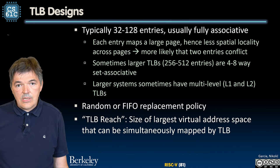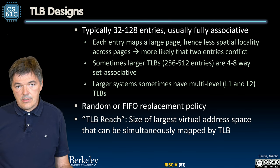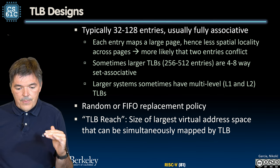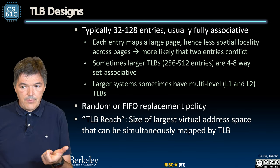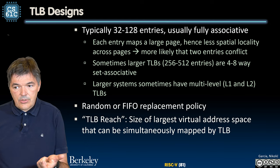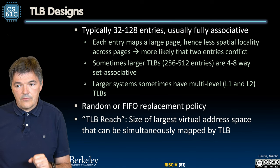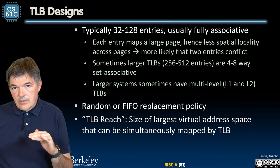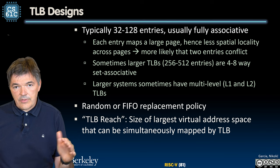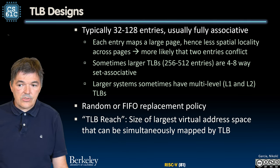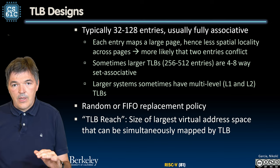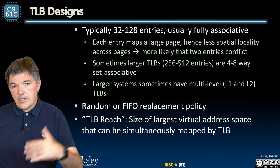So how is this TLB actually being designed in processors? Typical TLBs nowadays can be either small and quick — 32 to 128 entries — and are usually fully associative. Since each entry maps a large page, there is less spatial locality across pages and it is more likely that two entries will conflict, so full associativity does make sense. There are some large TLB designs that may have 256 to 512 entries, but they are made four to eight ways set associative, still done to ensure they can be exercised in approximately one clock cycle. The complexity is balanced between the associativity and the size of the TLB.